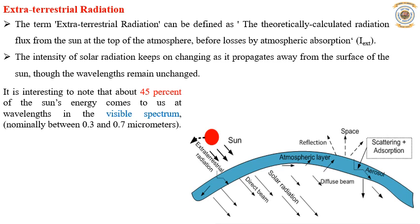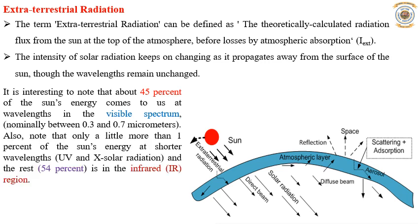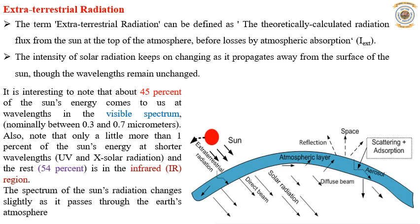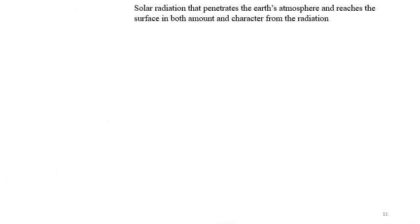It is interesting to note that about 45 percent of the sun's energy comes to us at wavelengths in the visible spectrum, normally between 0.3 to 0.7 micrometers. Only a little more than 1 percent is at shorter wavelengths in the form of UV or X-rays, and the remaining 54 percent is in the infrared region. The spectrum of the sun's radiation changes slightly as it passes through the earth's atmosphere.